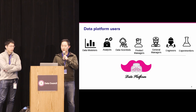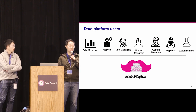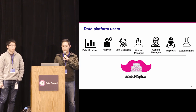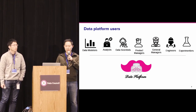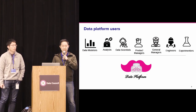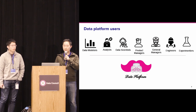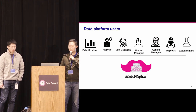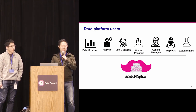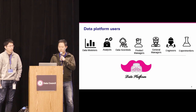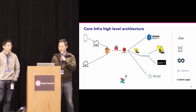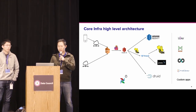In this big data era, almost every employee in the company is actually a user of the data platform. We categorize seven user personas that use the data: data modelers, data analysts, data scientists, product managers, general managers, engineers, and experimenters experimenting with data. Here are the users and a very simplified overview of Lyft's data infrastructure.